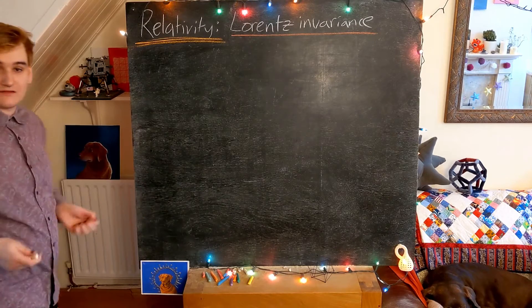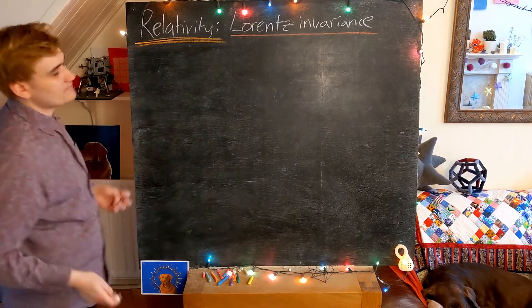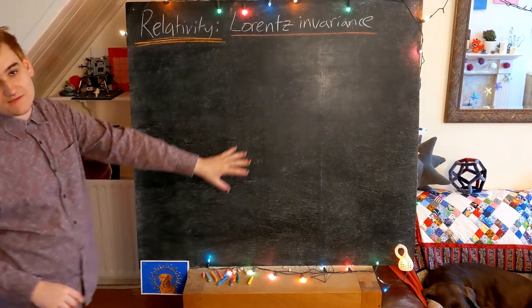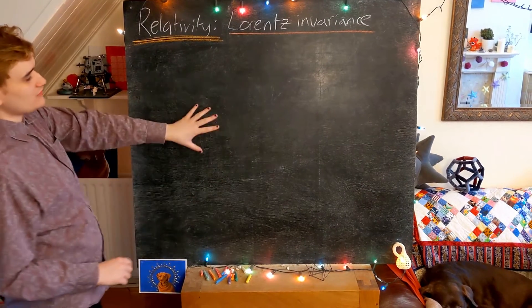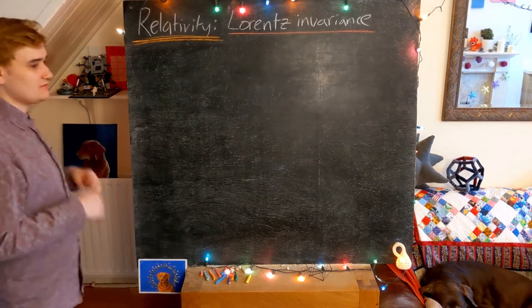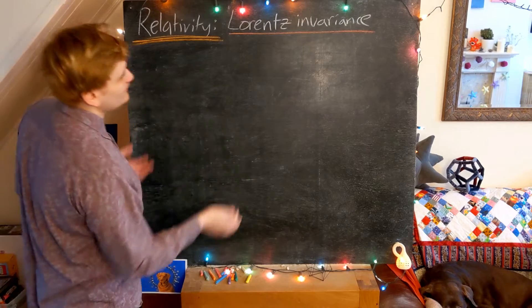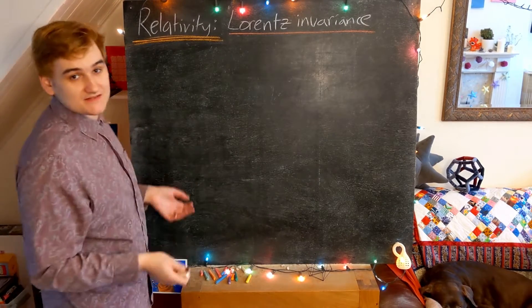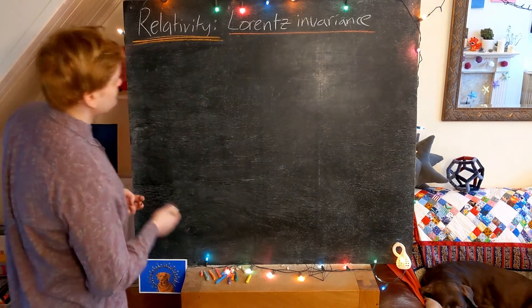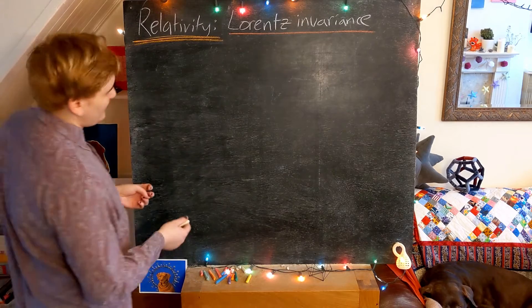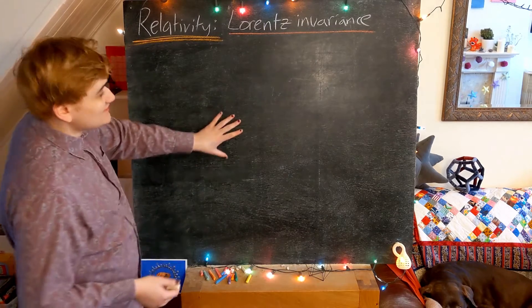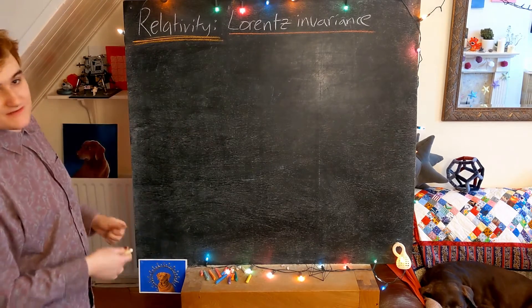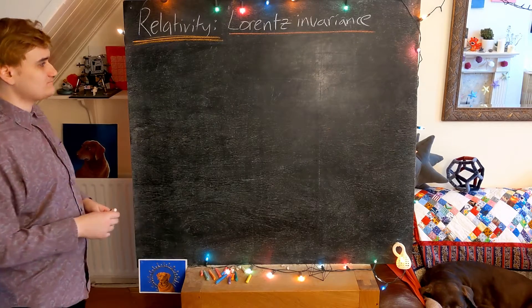We can take this idea a little bit further. If spacetime is a manifold on which we've defined coordinates, we also know we can construct other objects like vectors or tensors, and now vectors and tensors are also going to have their own notion of Lorentz invariance, which we're going to explore.